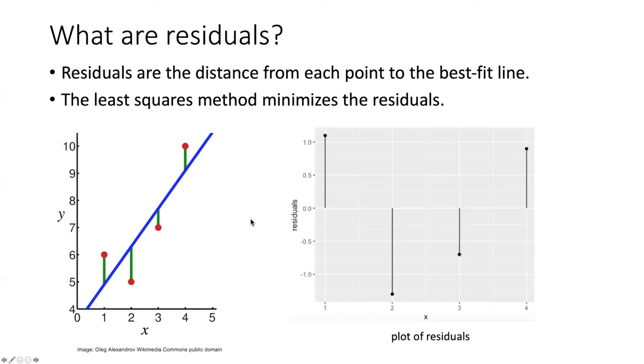Residuals are the distance vertically of each point from the best fit line. How far is each point above or below the best fit line? This diagram shows the model with the points and the residuals shown as green lines. If we plot the residuals with their distance from the line, a positive distance means they're above the line, negative distance means they're below the line.